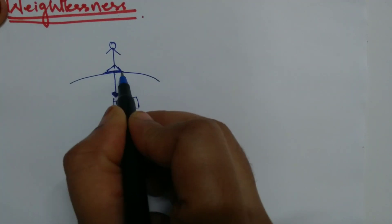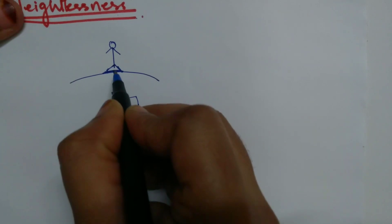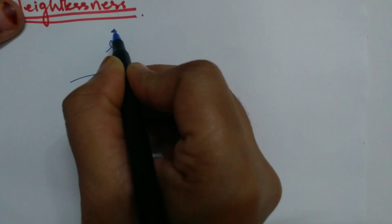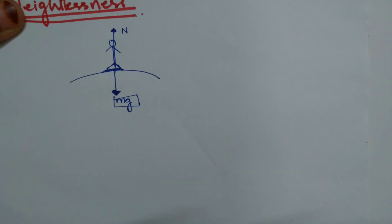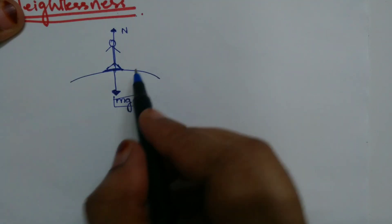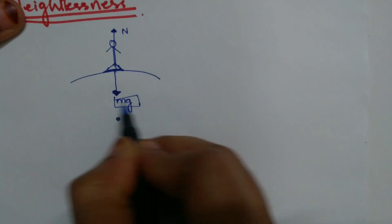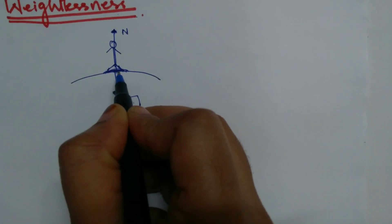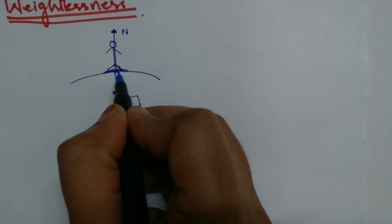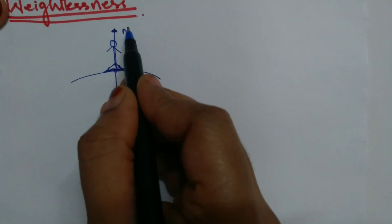Now what does the surface do? The surface will apply the same amount of force back at you, and that is known as normal reaction. Since the earth is attracting you towards its center with the force of mg, and the surface is also applying the same amount of force back at you — that is the normal reaction.